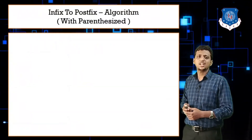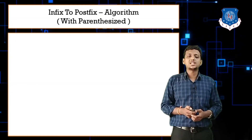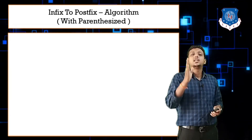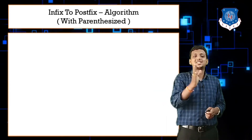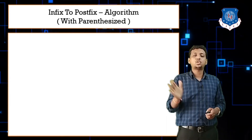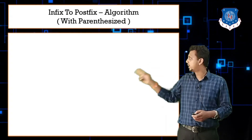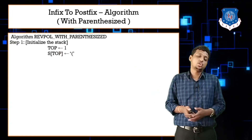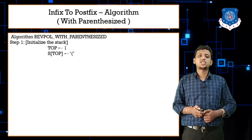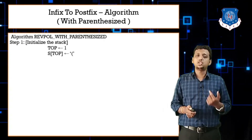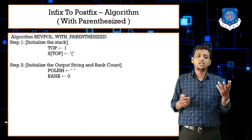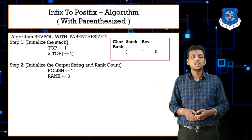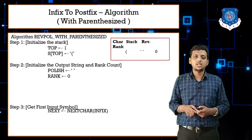For the infix to postfix with parenthesis algorithm, first we initialize the stack with the opening bracket. So: top = 1 and s[top] = opening bracket. Then initialize the reverse polish string as null and rank as zero.